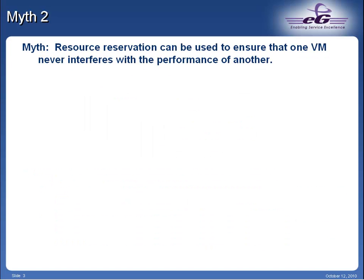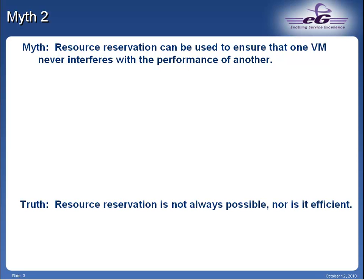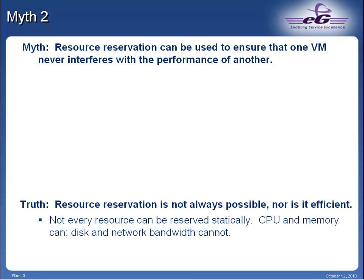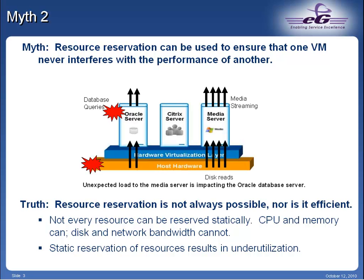The second myth is that resource reservation can be used to ensure that one VM never interferes with the performance of another. The truth is resource reservation is not always possible, nor is it efficient. Not every resource can be reserved statically — CPU and memory can, but disk and network bandwidth cannot. Additionally, static reservation of resources results in underutilization, as statically reserving CPU and memory for a VM prevents all other VMs from using those resources even if they are idle. As shown in this figure, unexpected load to the media server is impacting the Oracle database server. Without the right monitoring tools, you would be at a loss for isolating this type of resource contention.